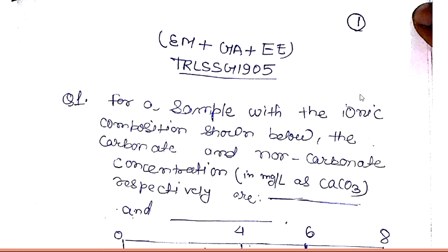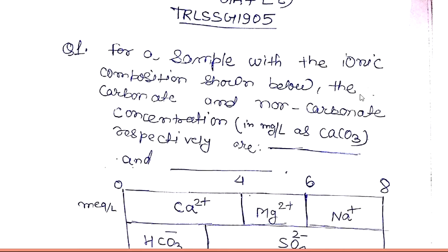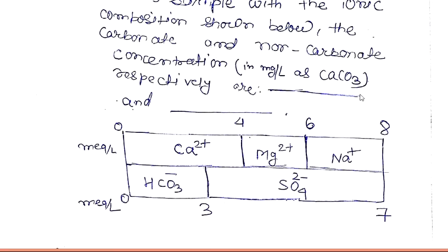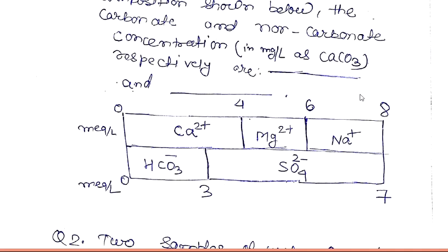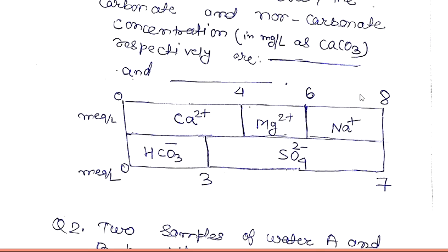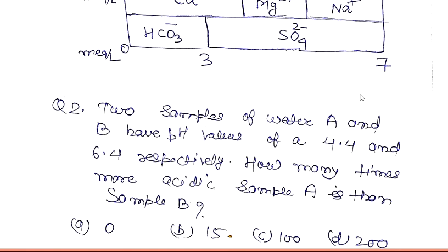The first question: for a water sample with the ionic composition shown, the carbonate and non-carbonate hardness concentration in milligram per liter as CaCO3 respectively are blank and blank. The data for the water sample is given and you have to find out the carbonate and non-carbonate concentration.